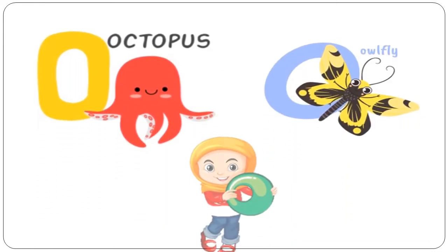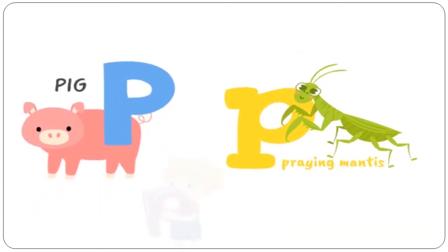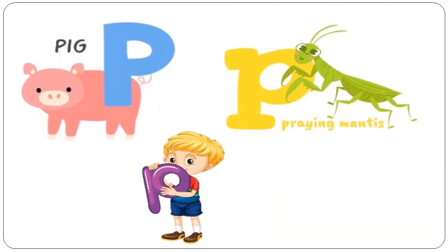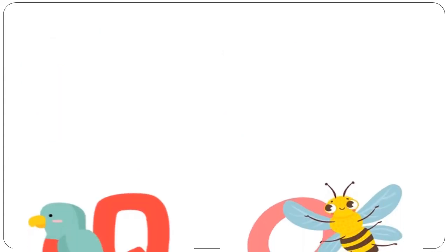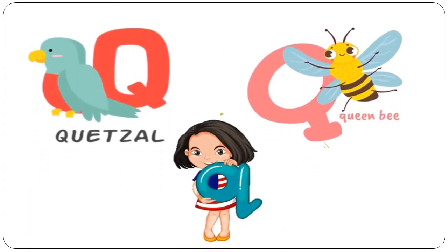O is for Octopus. O is for Owlfly. P is for Pig. P is for Praying Mantis. Q is for Quetzal. Q is for Queen Bee.